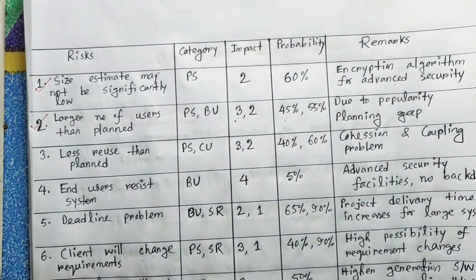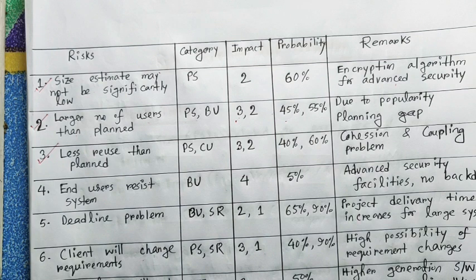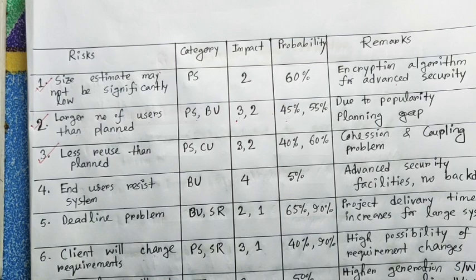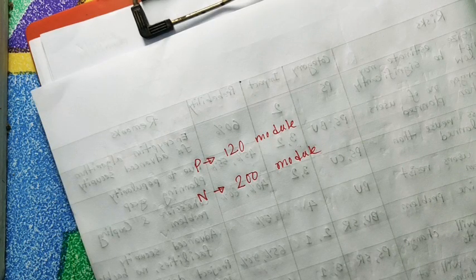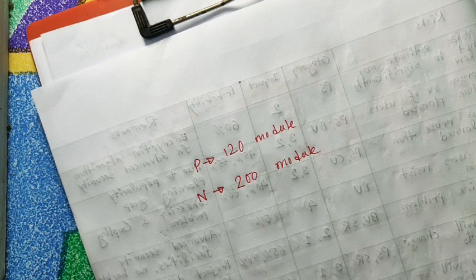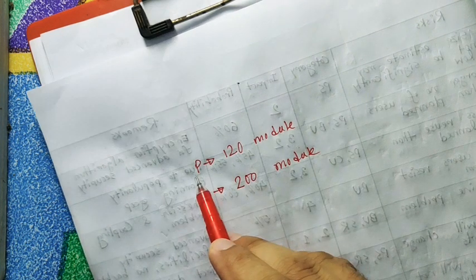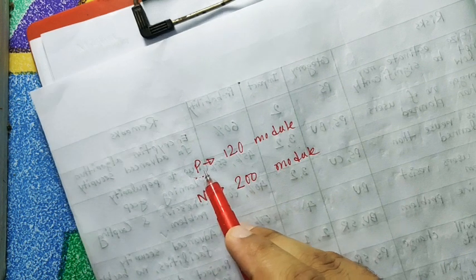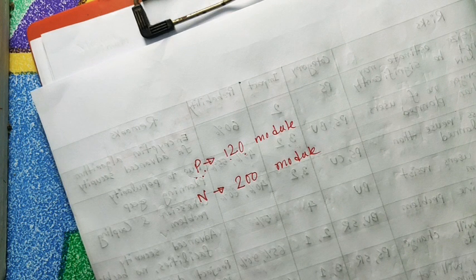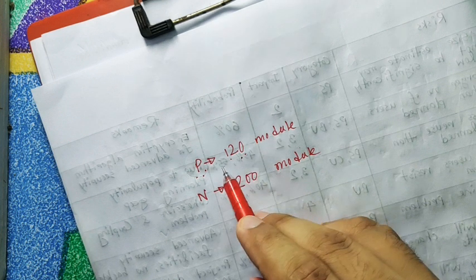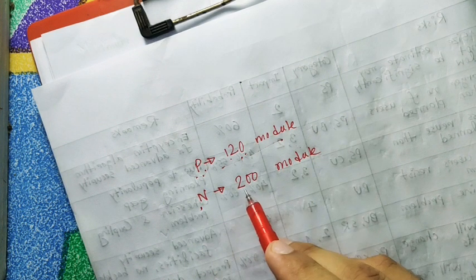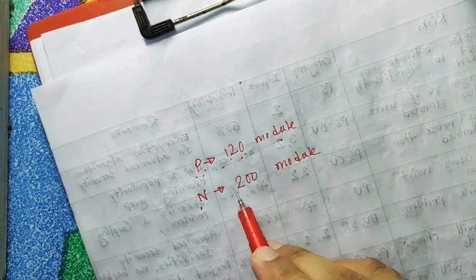Now we have the third problem. The third number is less reuse than planned. So try to understand less reuse than planned — which is why? Let's try to solve the problem. We have three-number point details. I will call this 'less reuse than planned' risk. I will call this previous version a software, which means that this software is a 100-module system. This software is 100 modules, and you can find the minimum amount. So this is the 120-module version, and you can find the module.